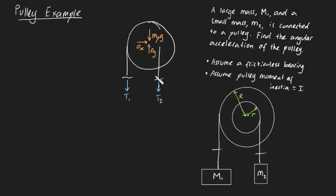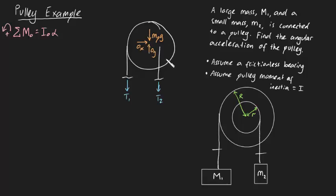Because we assume a frictionless bearing, we're not going to be dealing with counter-torques about point O. Now we're ready to get started. We're going to use the formula: the sum of moments about point O equals IO times alpha. I'm going to assume counterclockwise is positive, so any force that causes a moment in the counterclockwise direction is positive, and clockwise is negative. The two forces which produce moments are T1 and T2. None of the reaction forces produce moments about point O because they pass through point O.